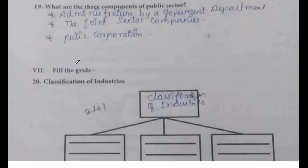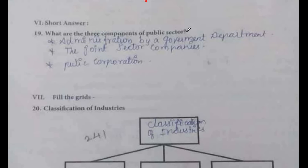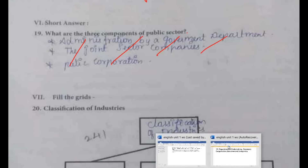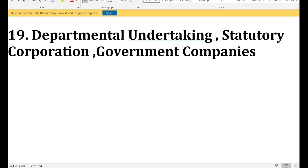Short answer: what are the three components of the public sector? The three components of the public sector are: departmental undertaking, statutory corporation, and government companies.